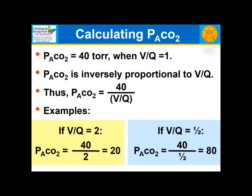The easy way to calculate alveolar PCO2: since PCO2 = 40 when VQ = 1 and CO2 is inversely proportional to VQ, alveolar PCO2 equals 40 divided by VQ. If VQ = 2, PCO2 = 40/2 = 20. If VQ = 0.5, PCO2 = 40/0.5 = 80. These match what we calculated the long way. To decrease PCO2, we can increase alveolar ventilation or increase VQ.